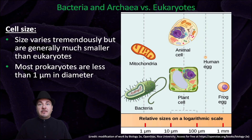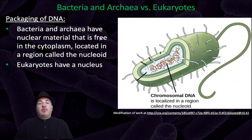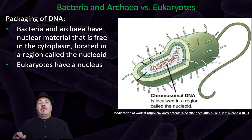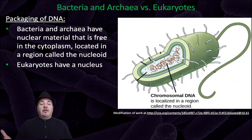In regards to cell size, prokaryotic cell size varies tremendously, but prokaryotic cells are generally much smaller than eukaryotic cells. Most prokaryotes are less than one micrometer in diameter. Whereas eukaryotic cells contain their DNA and chromosomes within the nucleus — a membrane-bound organelle — bacteria and archaea have nuclear material that's free in the cytoplasm, located in a region of the cell called the nucleoid.